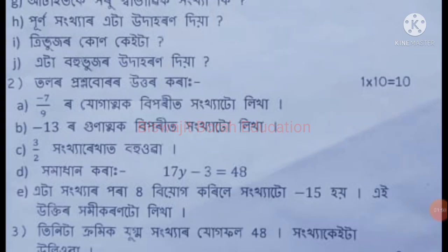Question 1 sub-parts: (A) Write the multiplicative inverse of minus 7 by 9. (B) Write the multiplicative inverse of minus 13. (C) What is the additive identity of the number 3 by 2? (D) Solve: 17y minus 3 equals 48. (E) Find a number such that 8 added to it gives minus 15. Write the statement of that equation.